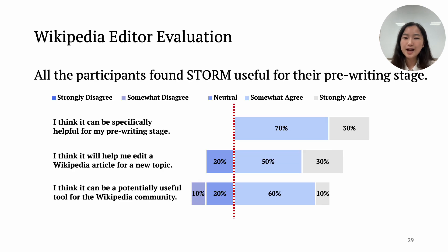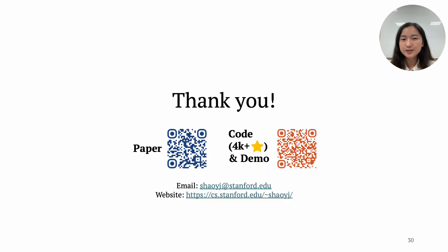We also conduct a survey to understand the practical usefulness of STORM. We are glad to find that all the Wikipedia editors in our experiments think STORM can be helpful for their pre-writing stage. To sum up, this work studies how to generate a Wikipedia-like article from scratch using language models. You can find more details in our paper and try STORM yourself through our open-source code. Thank you so much.